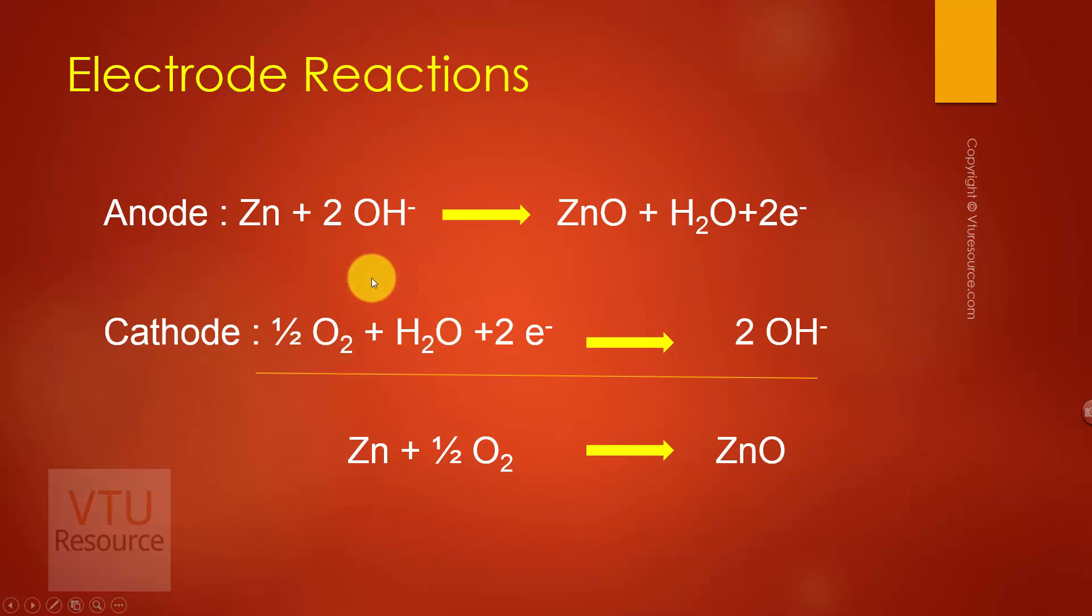That is, water undergoes reduction reaction in presence of oxygen and electrons to liberate hydroxyl ions. So the hydroxyl ions consumed at anodic site are liberated at cathodic site. Therefore the concentration of electrolyte remains same.